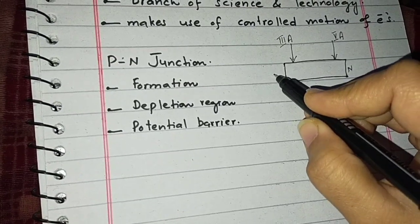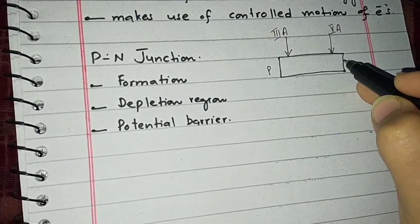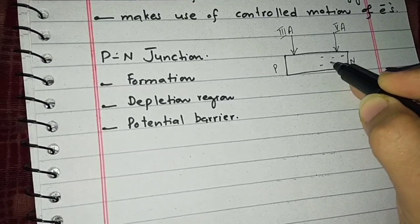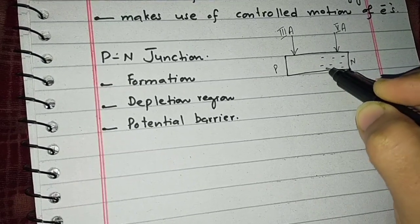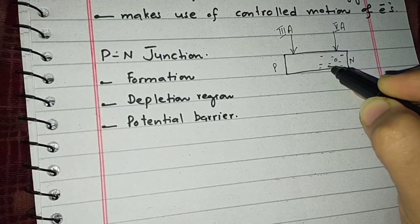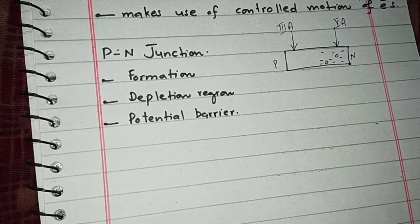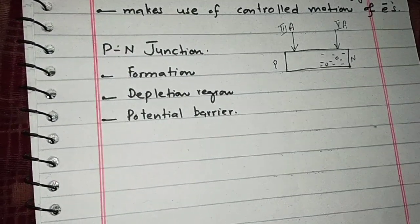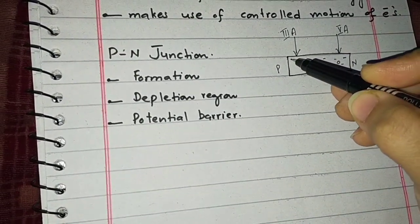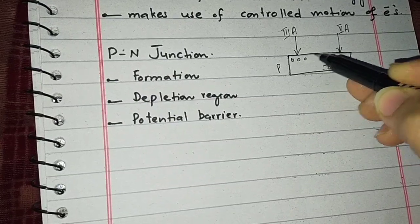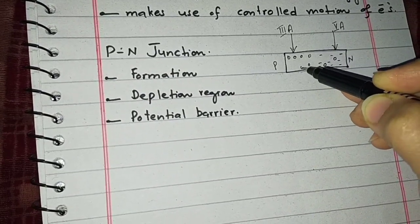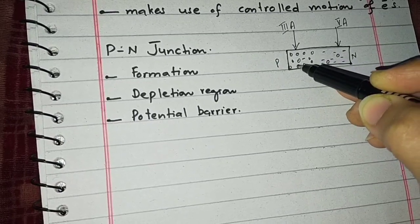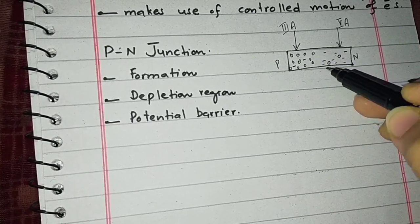In N-type materials, electrons are taken as the majority charge carriers, but holes also exist — they are very less in number, so we say they are minority charge carriers. While on the P side, we have holes as the majority charge carriers, and electrons also exist but they are very less in number, so we say they are minority charge carriers.